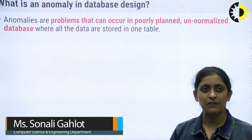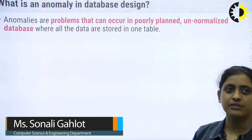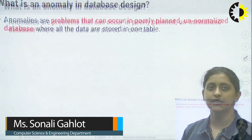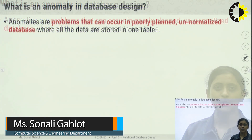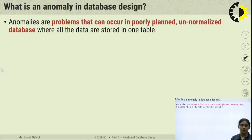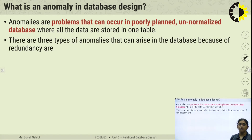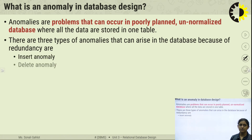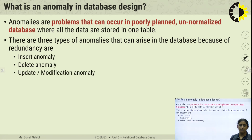First, I will tell you what are anomalies. Anomalies are the problems that can occur in a poorly planned and normalized database where all the data is stored in one table. There are three types of anomalies that can arise in the database due to redundancy: insert anomalies, delete anomalies, and update or modification anomalies.